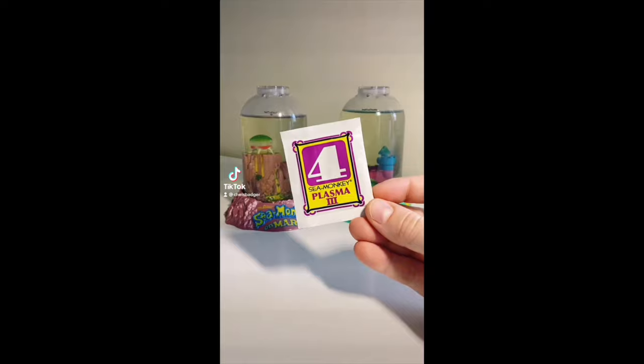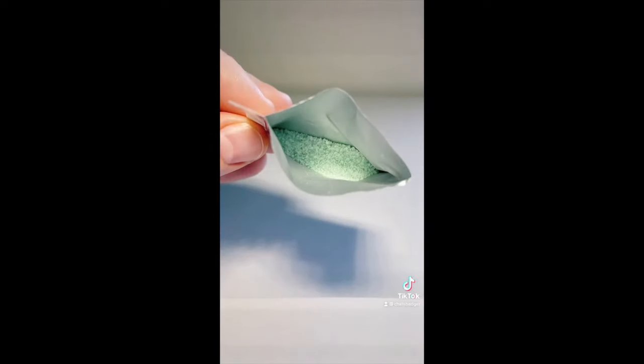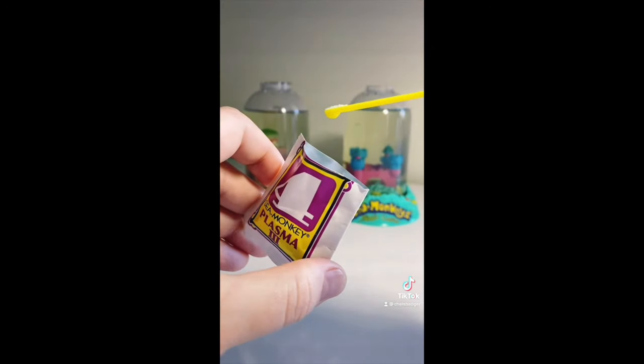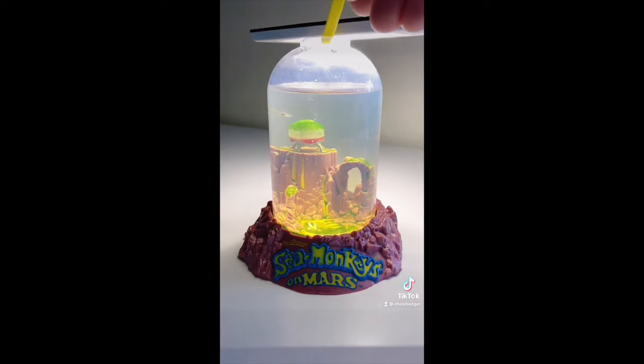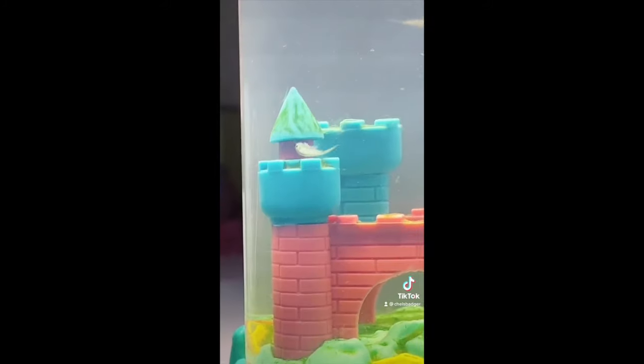The sea monkeys plasma packet is formulated so that 50% more sea monkeys will grow and thrive. The first time you use it is 10 days after you've added packet number 2 of the sea monkey eggs. With the new feeding spoon add 3 heaping scoops of plasma into your tank. If you have the old spoon use 1 scoop from the plasma side. Then once every 2 weeks you can add 1 scoop of the new spoon or 1 scoop of the food side of the old feeding spoon.